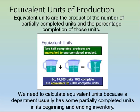Equivalent units of production is another concept. When we have products in production — in our work in process — we may have partially completed units that complicate the determination of a department's output for a given period and the cost that should be assigned to that output. So we're going to use equivalent units to represent the amount of work done during a period in terms of fully completed units of production.